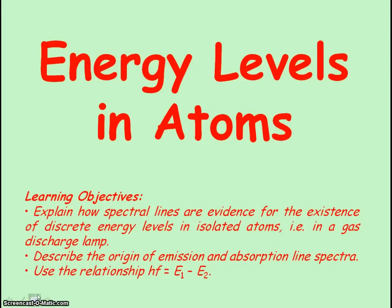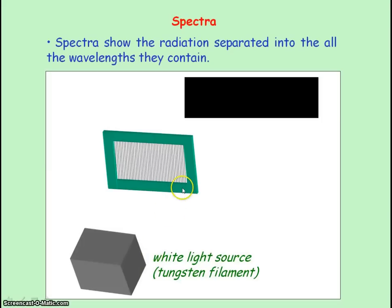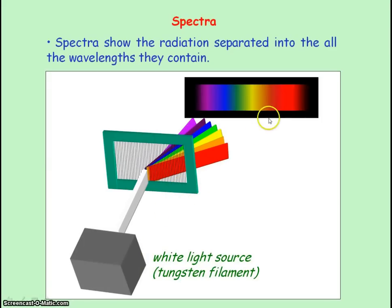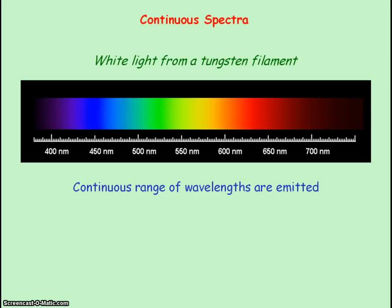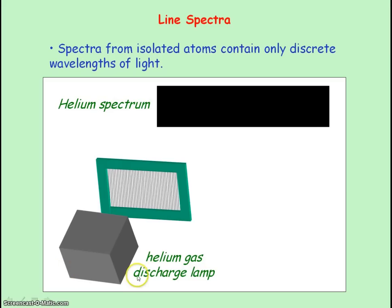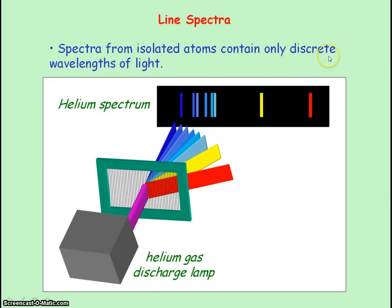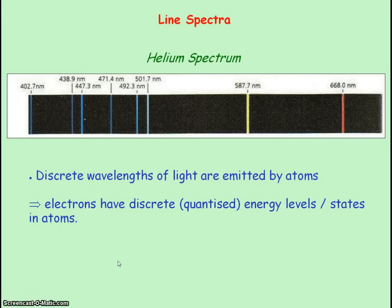We are going to be looking at energy levels in atoms. When white light is passed through a diffraction grating, a spectrum is produced which shows all the wavelengths of light separated out. White light contains a continuous range of wavelengths from 400 nanometers for violet to 700 nanometers for red light. However, the light emitted from a helium gas discharge lamp is not continuous but discrete — it only contains specific wavelengths of light. This provides evidence that electrons in atoms have discrete, or quantized, energy levels.